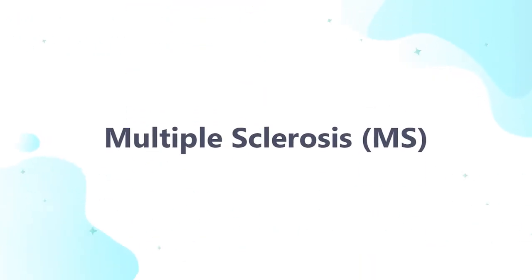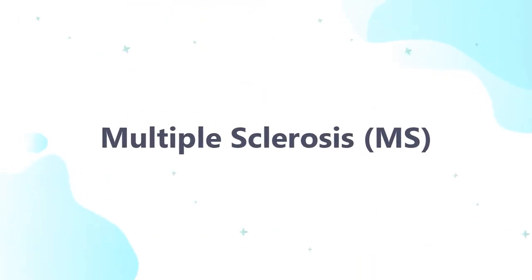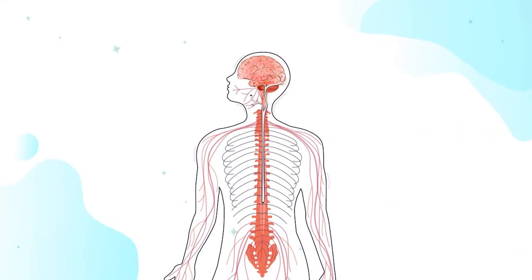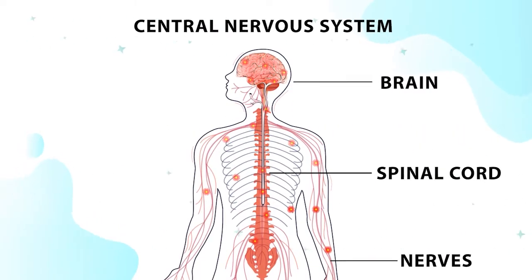Multiple sclerosis, also called MS, is a disorder of the immune system that affects the central nervous system, which includes the brain and the spinal cord.